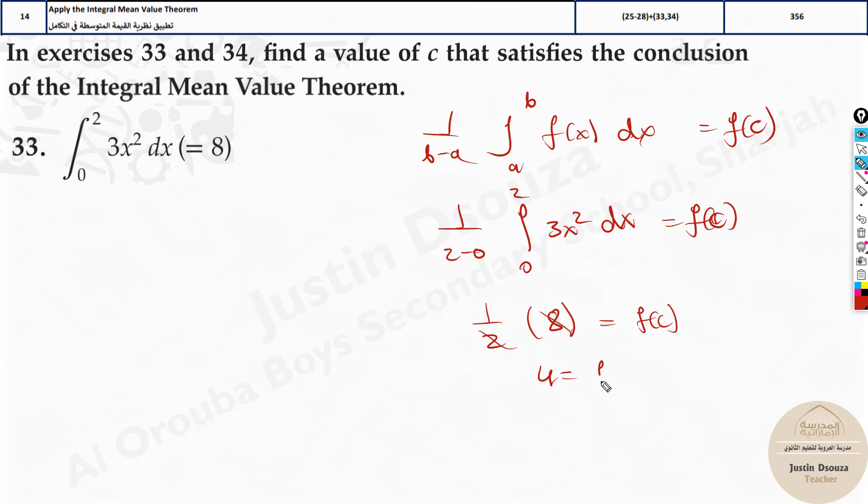So this becomes 8 equals f of c. So what is f of c? Cancel this. It will be 4 is equal to f of c. Now we got the function of c equals 4. So now a c value that satisfies the integral mean value theorem would be f of c. That means instead of x just put c over here. That's a thing. Now what we know f of c is 4. This must be satisfied. So take the 3 to the other side. It will be 4 by 3. That is equal to c squared. It is square root plus or minus 4 by 3 is equal to c. This is the value that satisfies the integral mean value theorem.